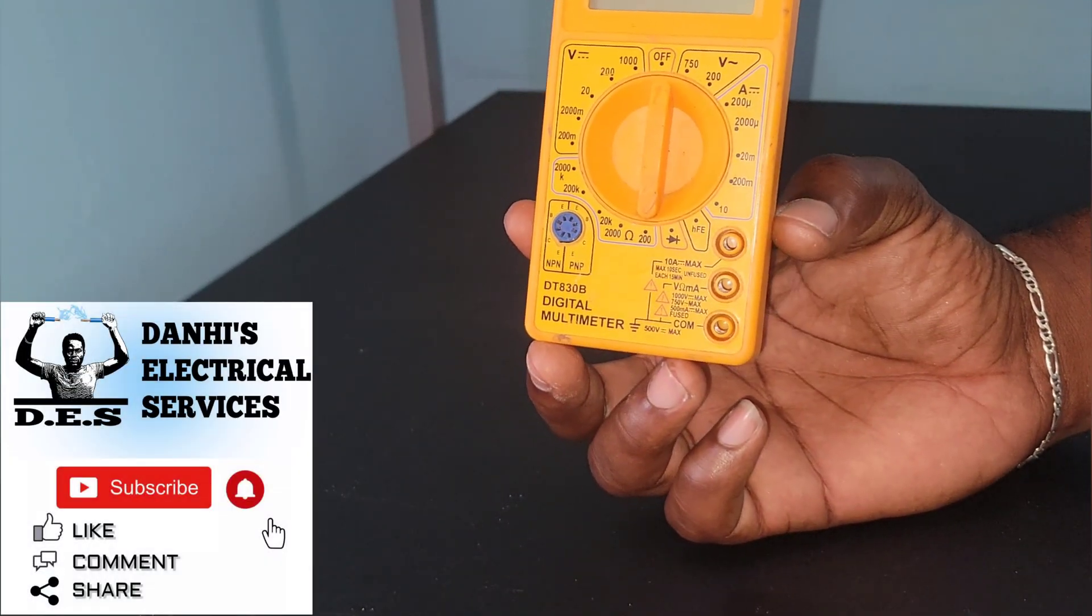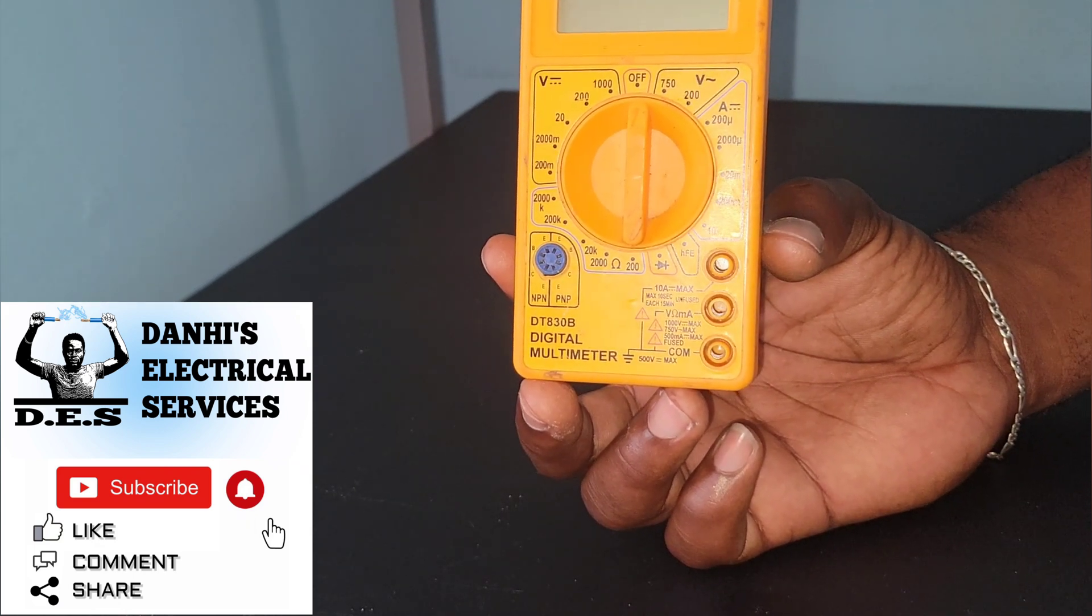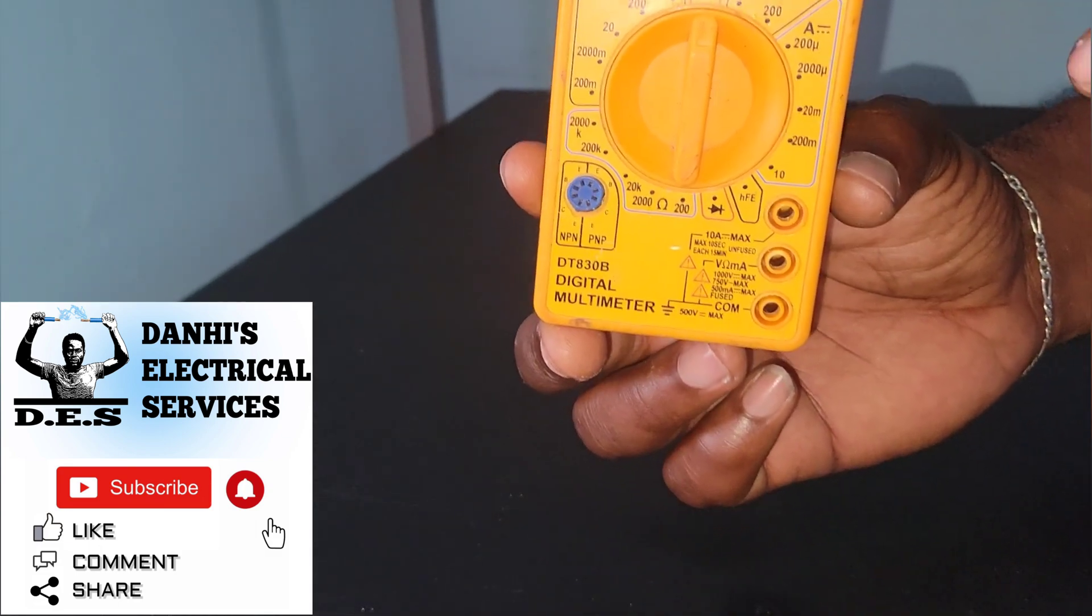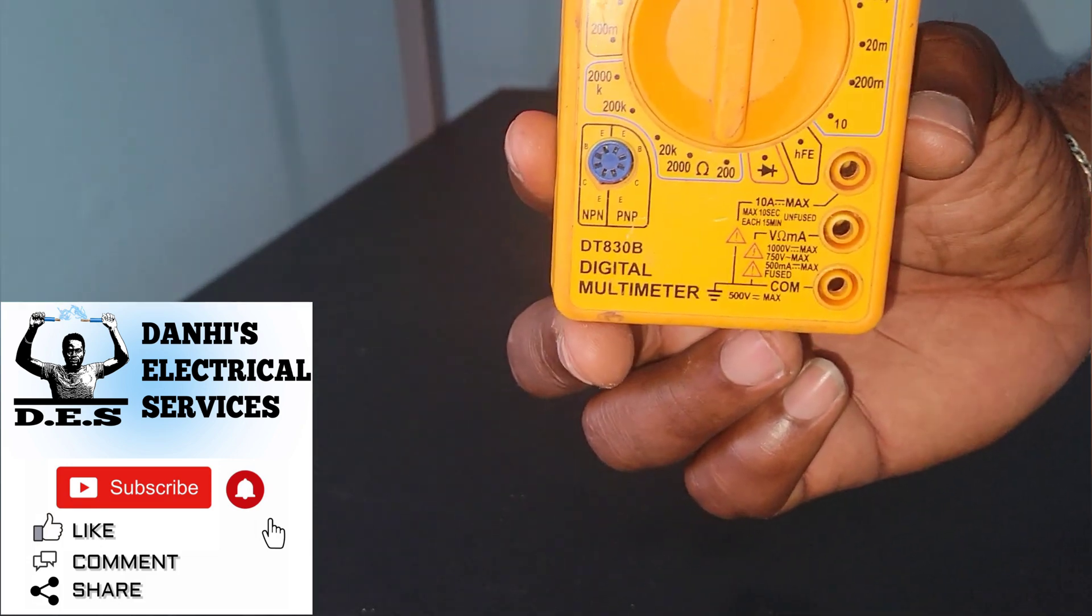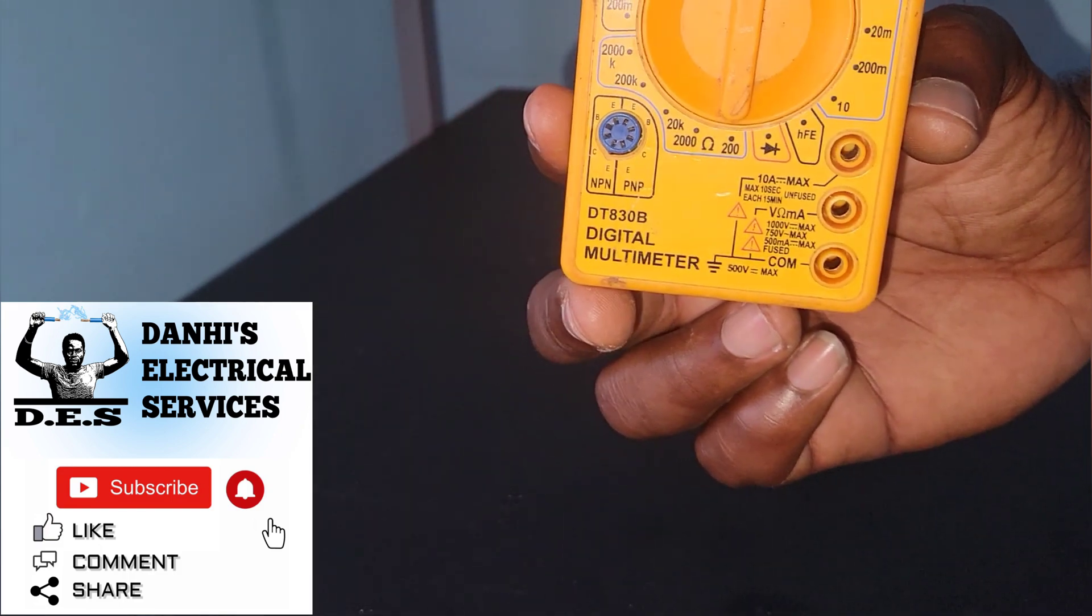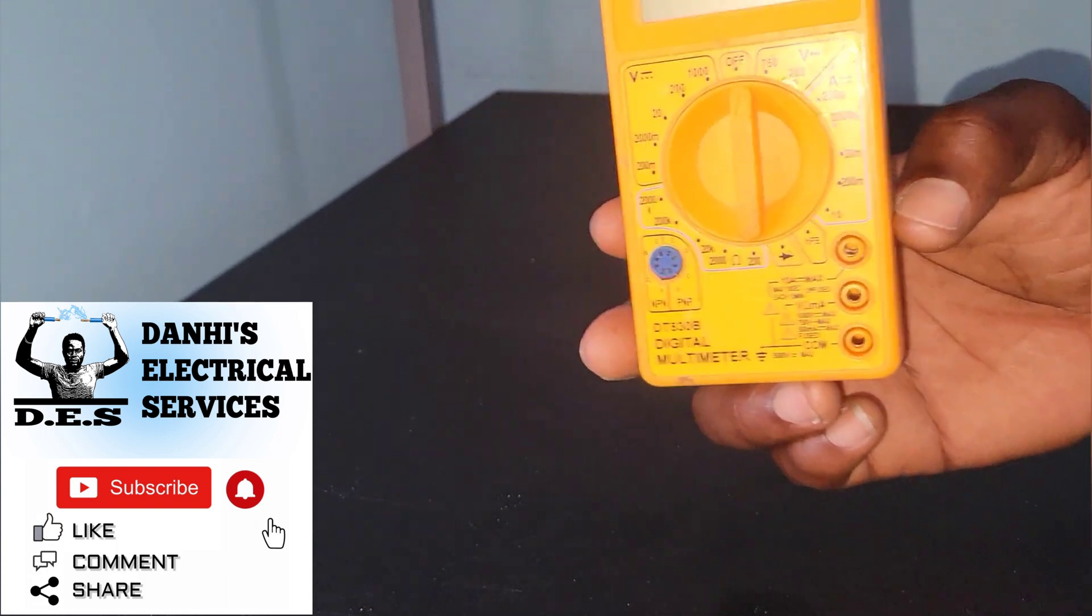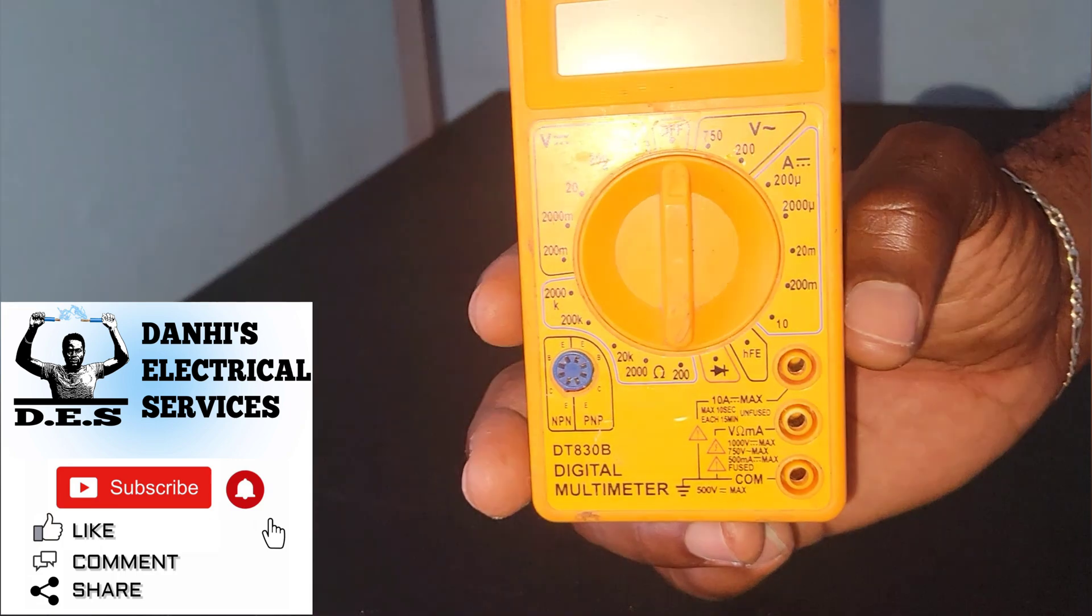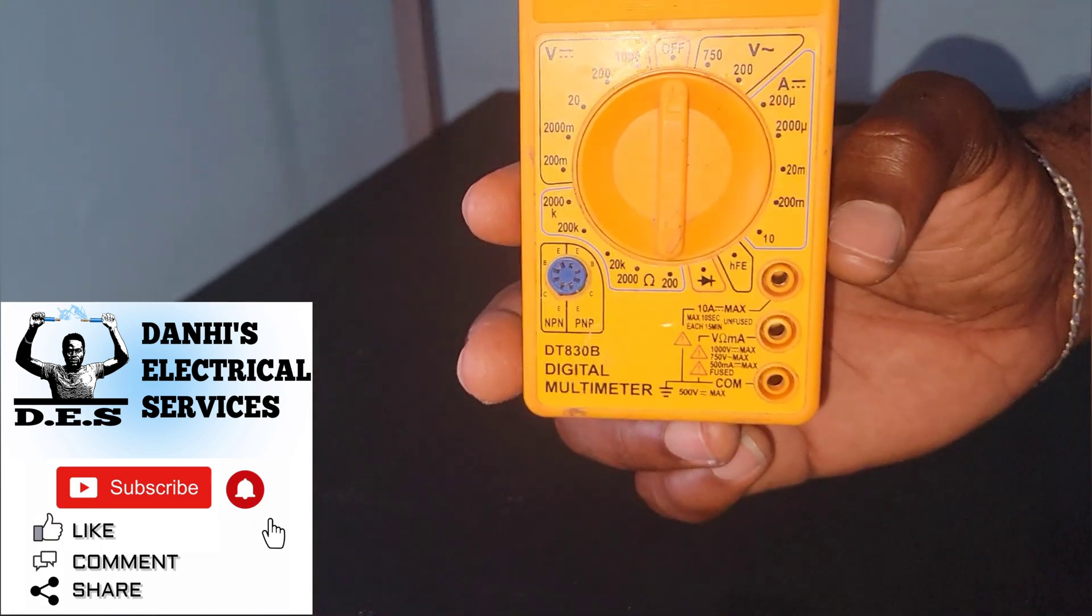For more videos like these, please feel free to subscribe to my channel, Danai's electrical services. Also, the price for this multimeter is now $9.79, so it has increased by almost $2 since 2017. Not bad, not bad at all. Yep, so that's it guys. Thank you for watching this video. Please remember to like, subscribe, and comment. Let me know what you think about this multimeter.